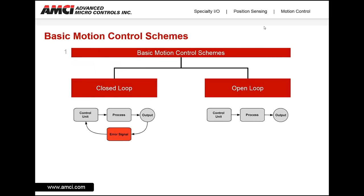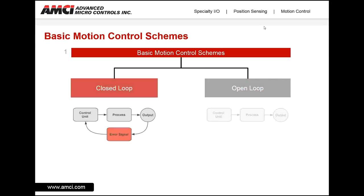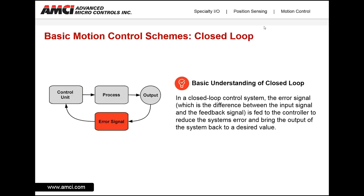There are two basic control methods: closed loop, which includes a feedback loop as part of the overall system, and open loop, which does not include feedback as part of the control scheme. In a closed loop control system, the error signal — which is the difference between the input signal and the feedback signal — is fed to the controller to reduce the system's error and bring the output of the system back to a desired value.